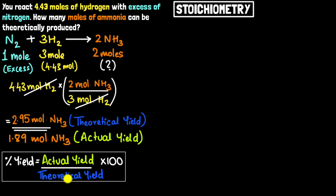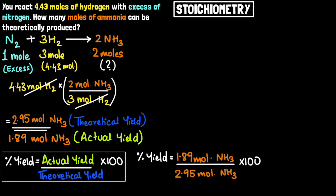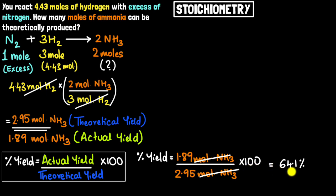We can define something called the percent yield, which is the actual yield divided by the theoretical yield multiplied by 100. In our example, that's 1.89 moles of NH₃ divided by 2.95 moles of NH₃, multiplied by 100. The moles of NH₃ cancel out, so percent yield is unitless. This gives about 64.1%, meaning we achieved about 64.1% of the maximum yield we could theoretically get. Calculations on paper only give us the theoretical yield; for the actual yield, we must do the experiment in the lab.